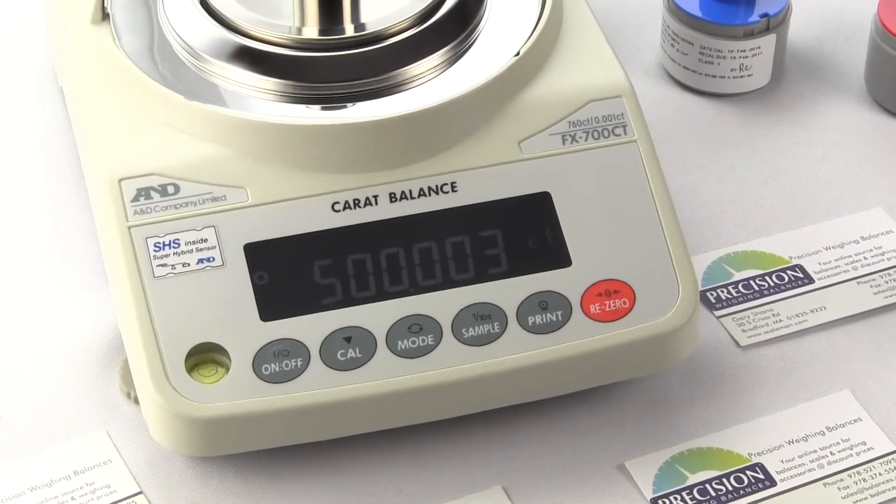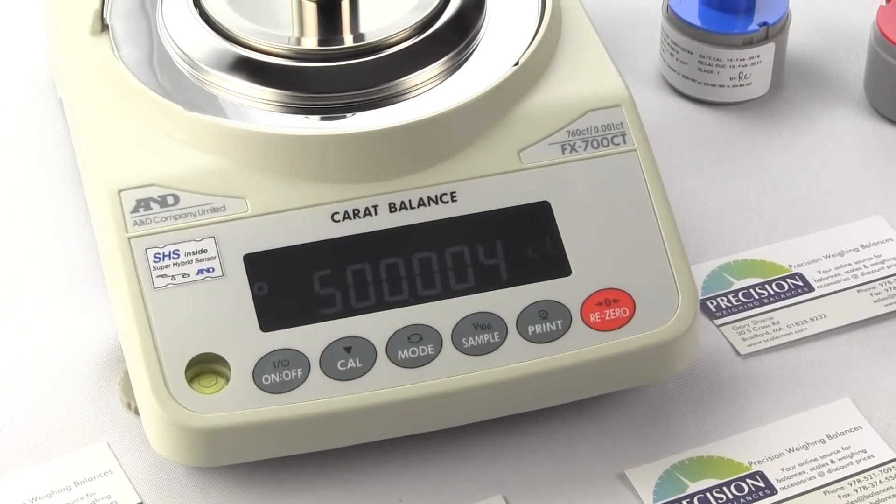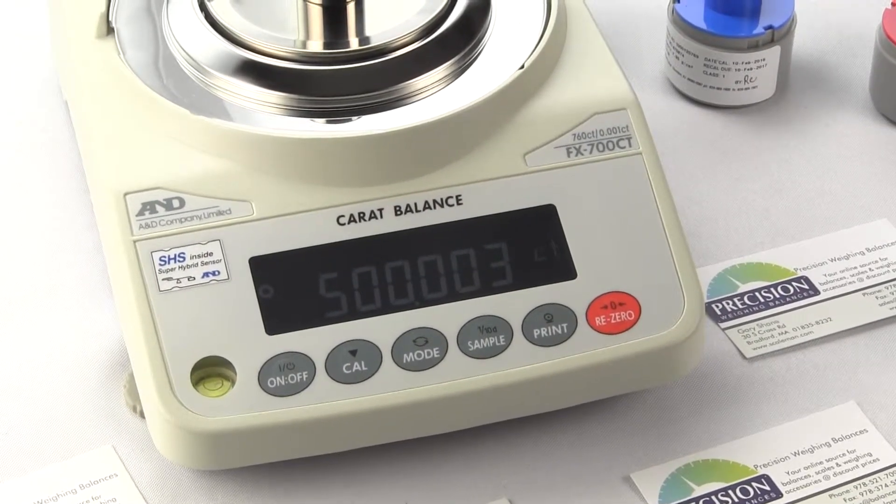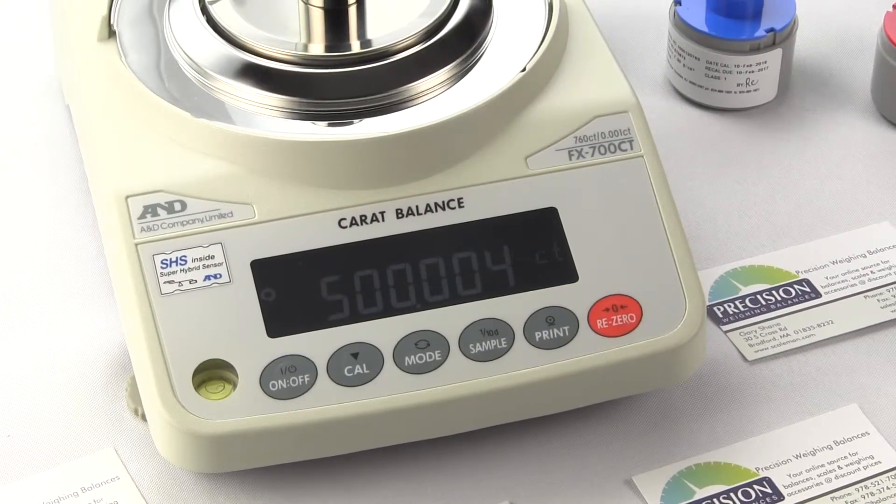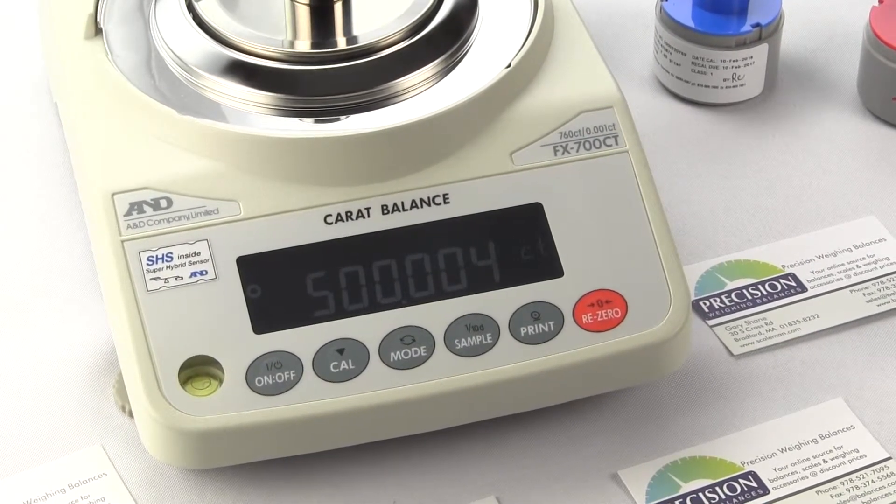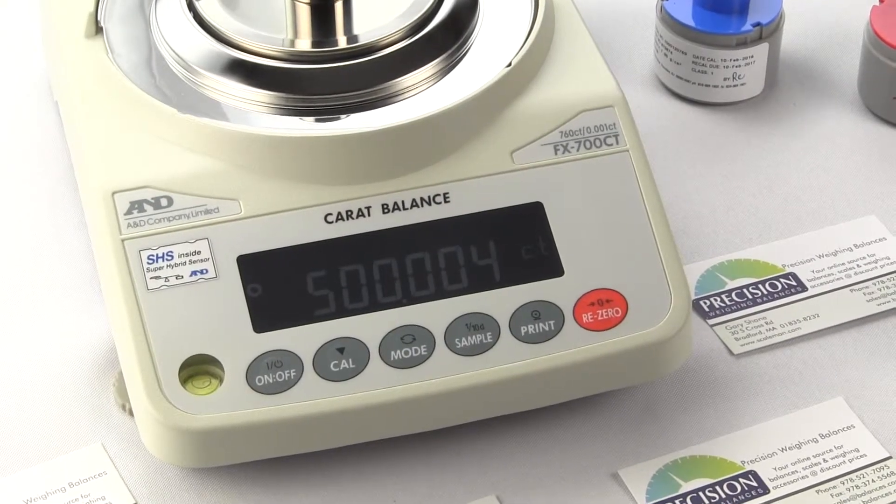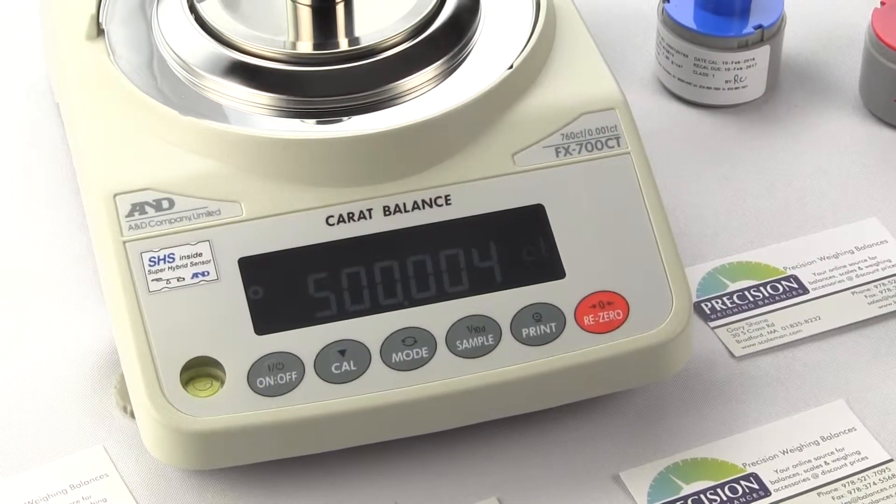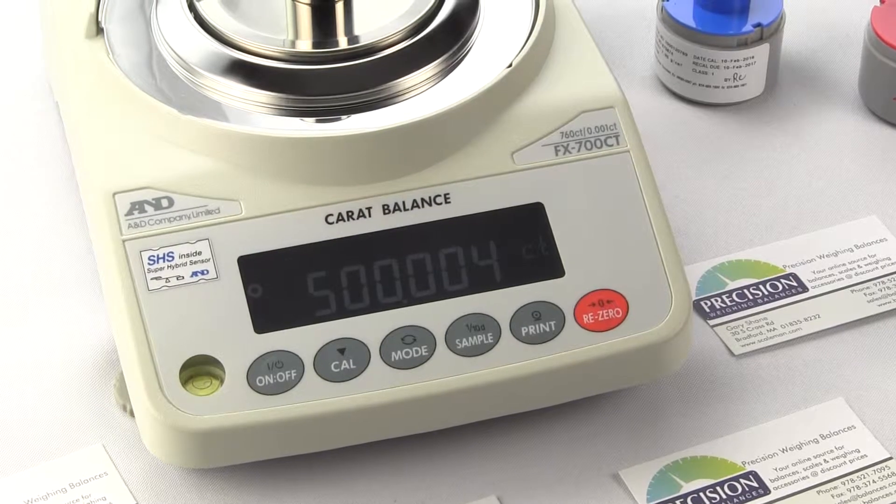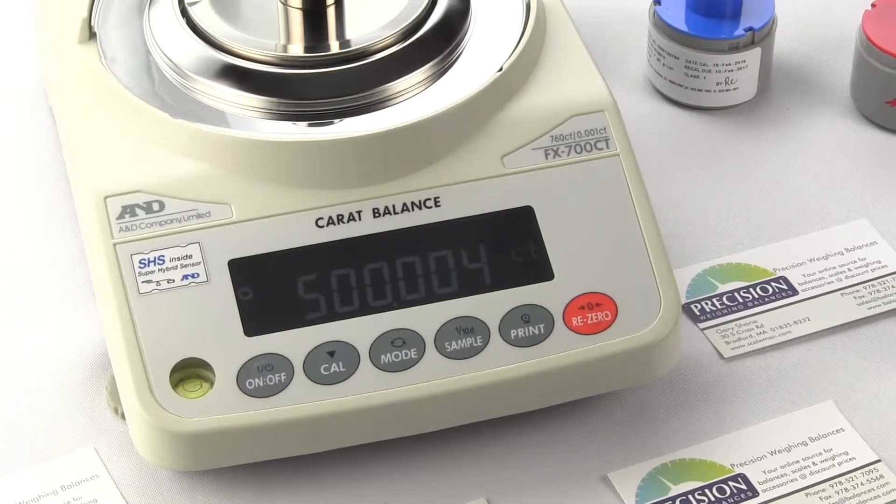The FX700CT is not legal for trade so it's non-NTEP. So this carat scale would be used for more like sorting diamonds by weight or maybe appraisals versus selling diamonds. Most states require legal for trade when goods are sold by weight. We offer several Mettler Toledo balances that are legal for trade but they'll cost a lot more money than the FX700CT. States like New York, Arizona, California and Florida have very strict legal for trade rules. This is an affordable price balance that makes a great carat scale for any jeweler, hobbyist or gem collector.